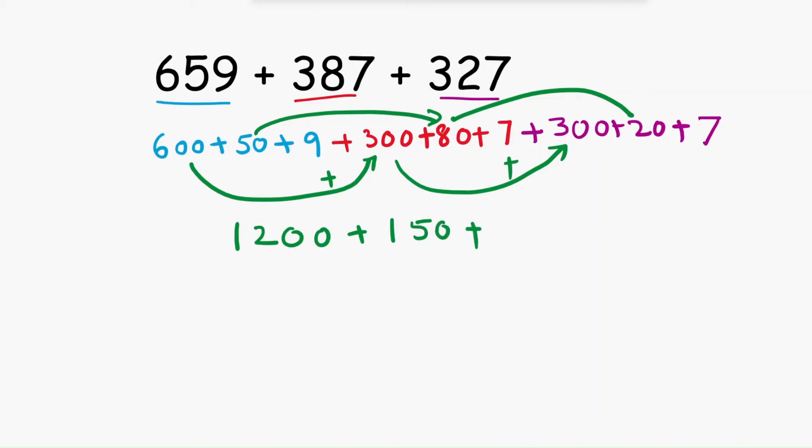Now add the single digits: 9 plus 7 is 16, 16 plus 7 is 23. If you add these numbers, 1200 plus 150 plus 23, these two will be 173, and the answer is 1373.